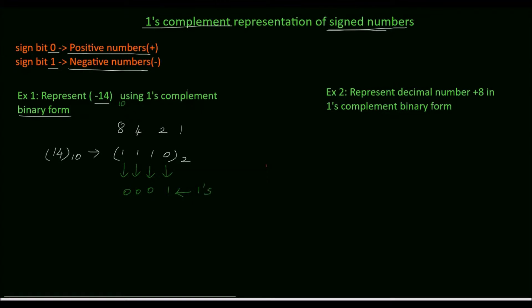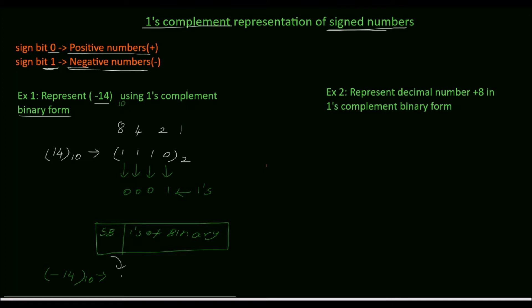To represent signed numbers in one's complement form, the syntax is: sign bit followed by one's complement of the actual binary. For minus 14, since it is a negative number, the sign bit is 1. Then write the one's complement of the actual binary, which is 0 0 0 1. So 1 0 0 0 1 base 2 is the one's complement representation of the decimal number minus 14.